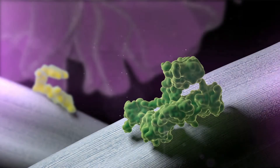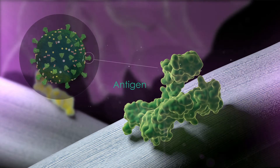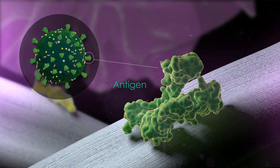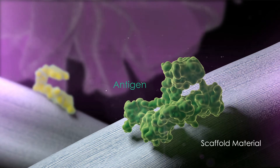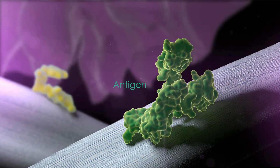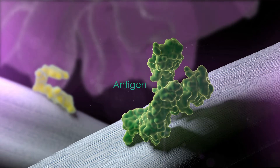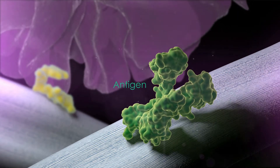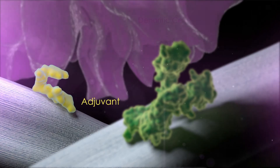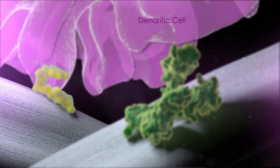The Omnivax platform incorporates the target antigens, such as surface proteins from viral or bacterial pathogens, within the biomaterial scaffold structure. The antigens, which can be either specific antigens or combinations of different antigens, are presented along with immunostimulating adjuvants to dendritic cells.